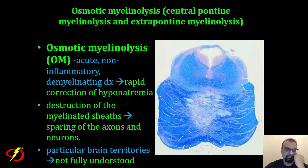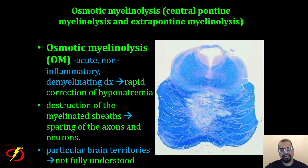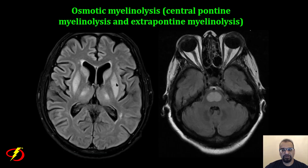Rapid overcorrection can result in osmotic myelinolysis — previously called central pontine myelinolysis because it was seen in alcoholics affecting the pons. It is an acute non-inflammatory demyelinating disease caused by destruction of myelin sheaths with sparing of the axons and neurons. Other brain structures can be involved, including the basal ganglia and lateral thalami, which is why the term has been updated from central pontine myelinolysis to osmotic myelinolysis.